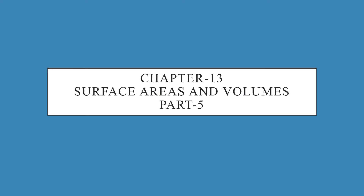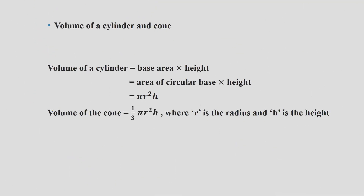Good morning children. Today in Surface Areas and Volume Part 5, we are going to study about the volume of a cylinder and cone. In the previous slide we have already learned about the total surface area and the curved surface area of a cylinder and cone. Now let us study the volume of a cylinder, which we learned in Class 8: base area into height. We know the base of the cylinder is circle in shape, and the area of a circle is pi r square. Let h be the height of the cylinder.